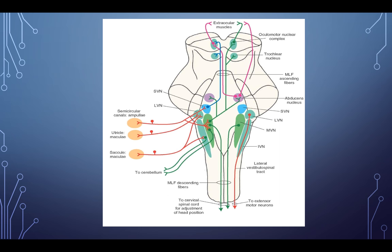Input from the semicircular canals, utricle, and saccule integrates into the vestibular nuclei in the pons and medulla of the brain stem. Activation of the lateral vestibulospinal tract produces descending fibers to the cervical muscles. This means patients with chronic neck pain or neck issues may actually have an underlying vestibular movement problem, and if unaddressed, that chronic pain may cause changes in tone to the cervical spinal cord and musculature.